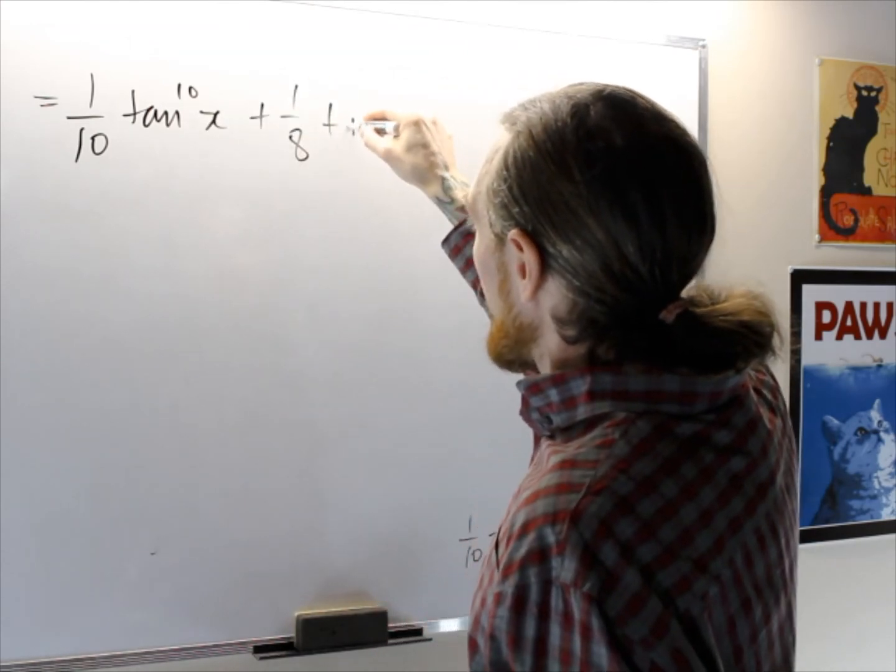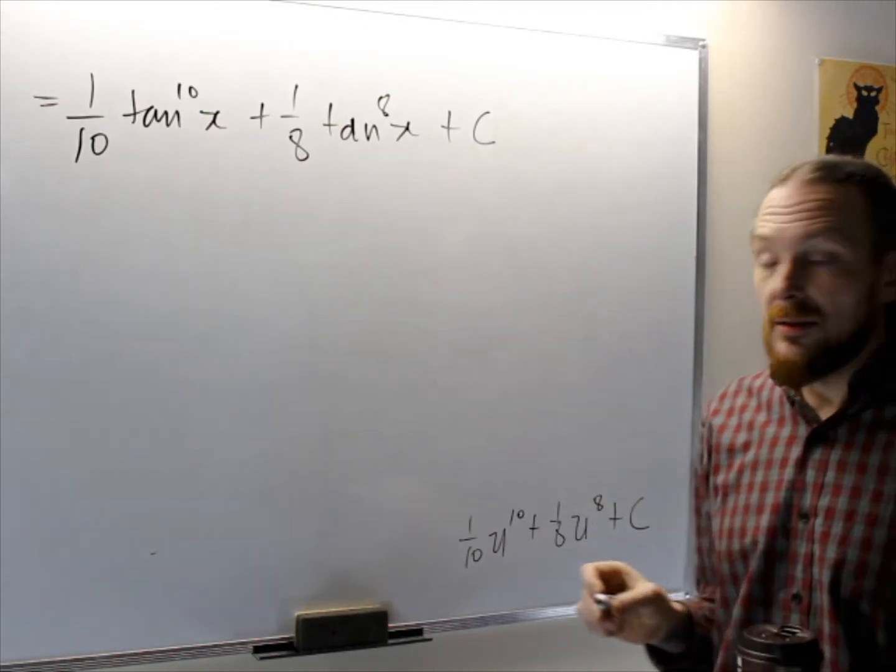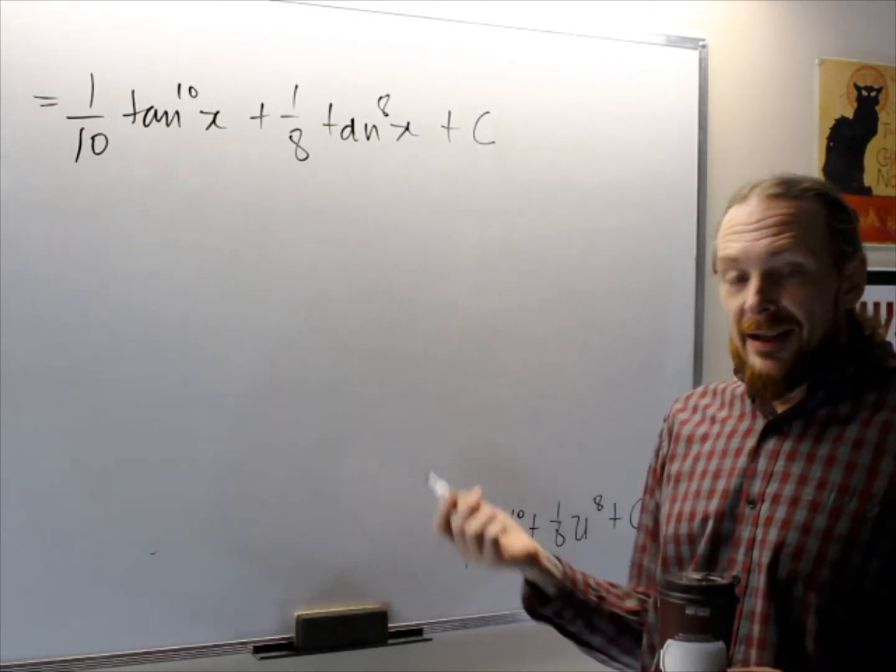What was u? u was tan x. So this equals one over ten tan to the ten x plus one over eight tan to the eight x plus C.